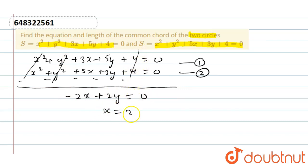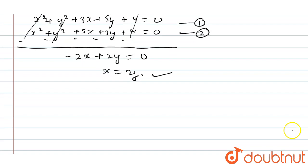So the x value equals y. This is the equation of the common chord. Next, we need to find the length of the common chord.